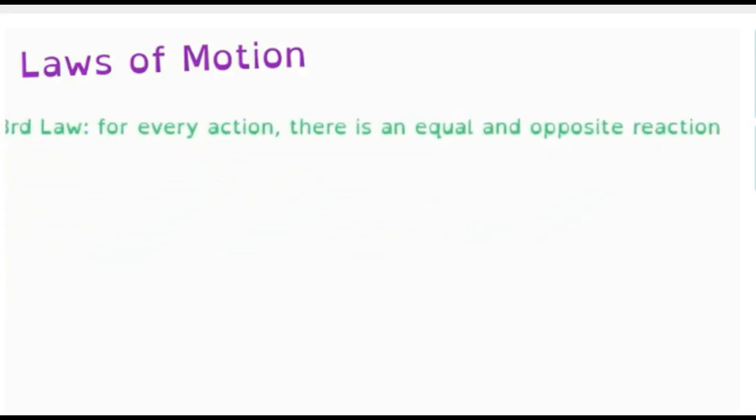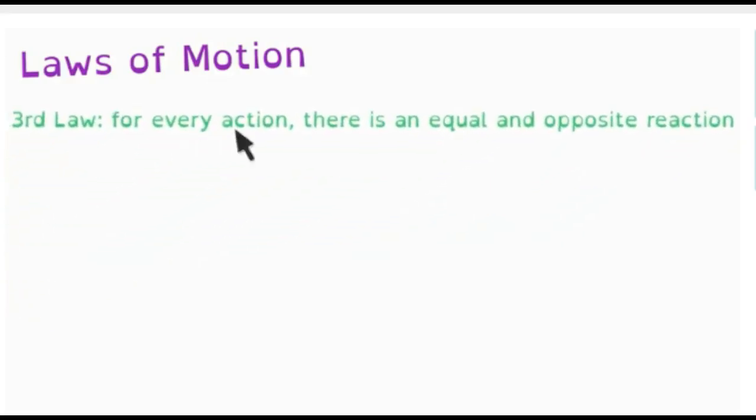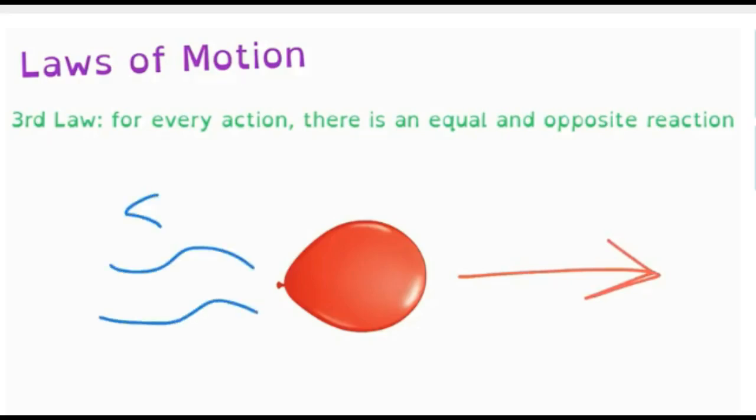Our third law of motion. For every action, there is an equal and opposite reaction. So let's say that I were to blow up into a balloon, and if I have a bunch of air blown into this balloon, and I go to let the air balloon, if I go to let the balloon go, well, the balloon is going to go forward because it's going to be pushing air outside of it.